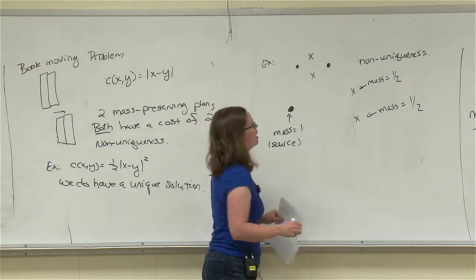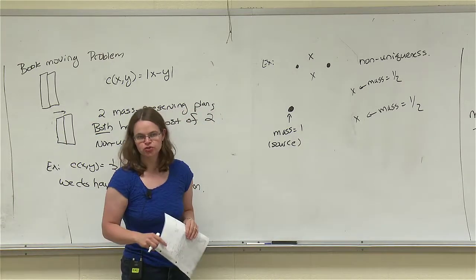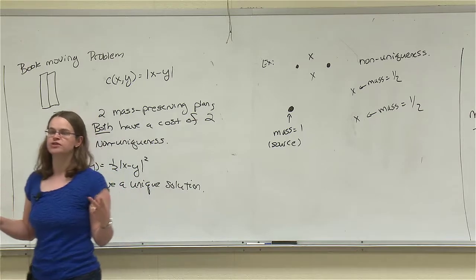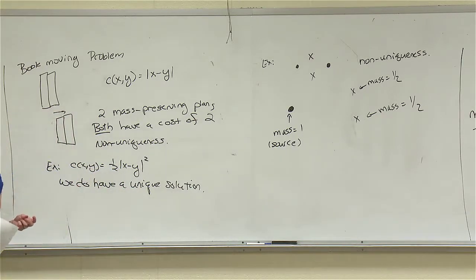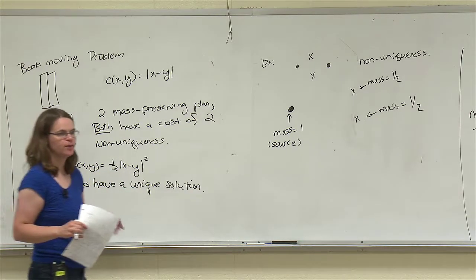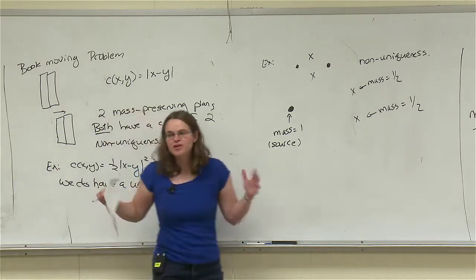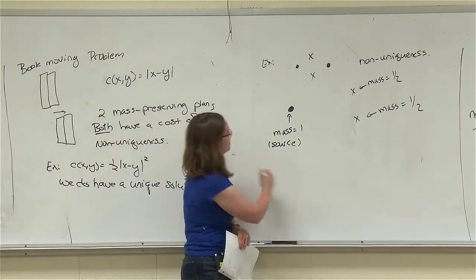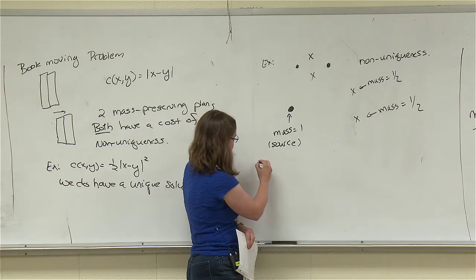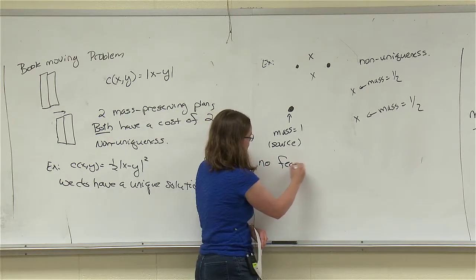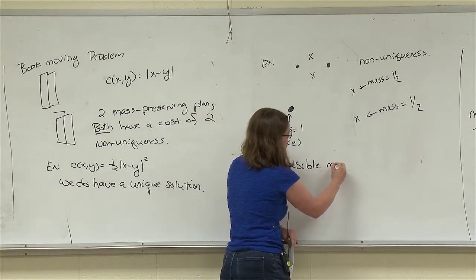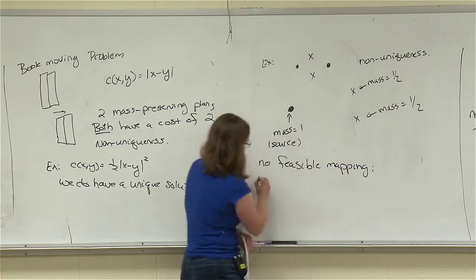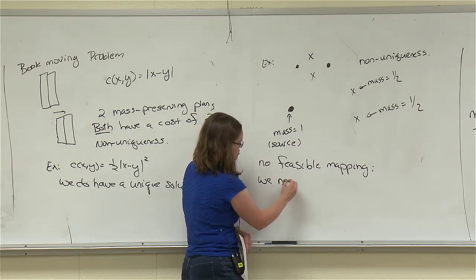The Monge formulation is great for many problems and easier to work with in a lot of cases, but you need to make sure you're in the regime where it makes sense. In this case — a Dirac source mapping to two Dirac targets — there is no feasible mapping. We need to be able to allow mass to split.